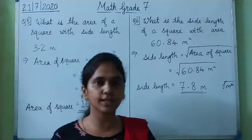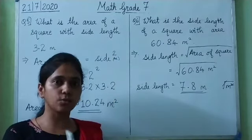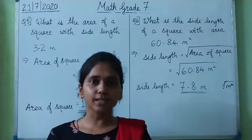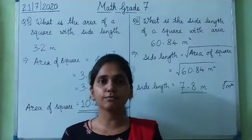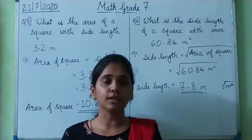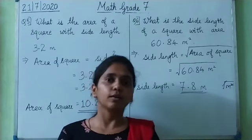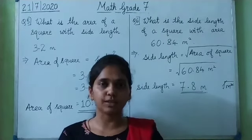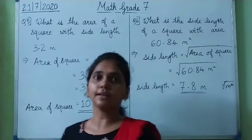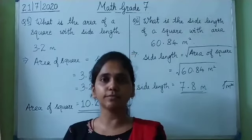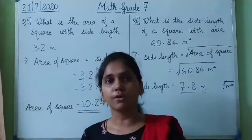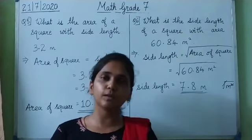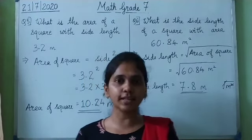Has everyone understood what we have done in today's class? We have seen how to find the square and square root of whole numbers and decimal numbers, how to use the calculator, how to find square roots of fractions and decimal numbers without a calculator, and how to find the area of a square if the side is given and the side length if the area is given. That was an application of squares and square roots. I hope everyone has understood today's class. We will meet in the next class. Take care, bye.